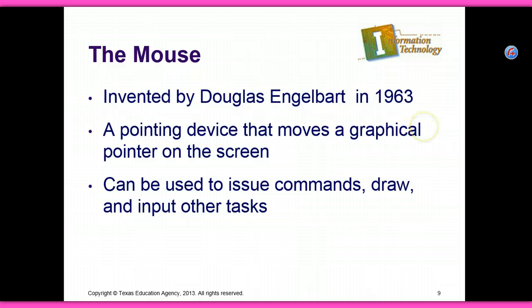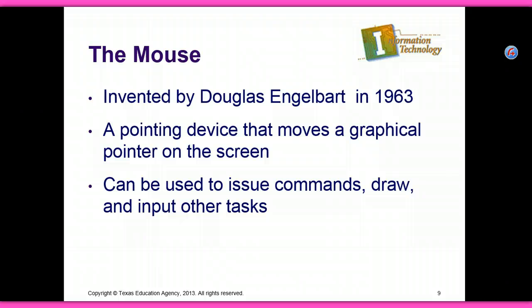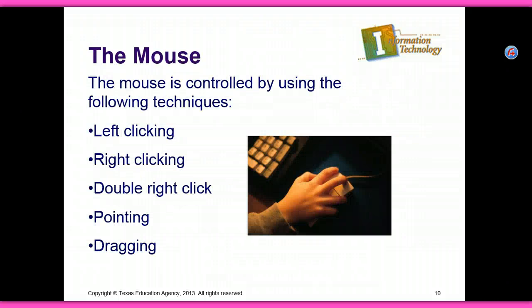The mouse was invented by Douglas Engelbart in 1963. It is a pointing device that moves a graphical pointer on the screen and can be used to issue commands, draw, and input other tasks. The mouse is controlled by using the following techniques: left clicking, right clicking, double right click, pointing, and dragging.